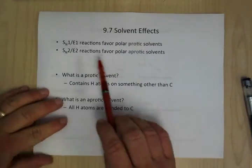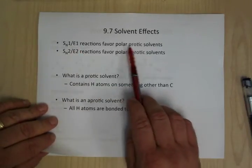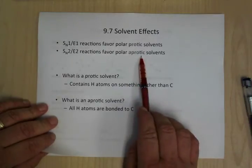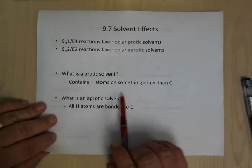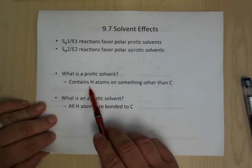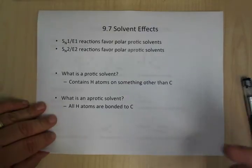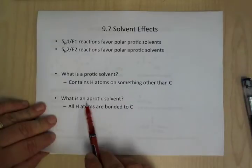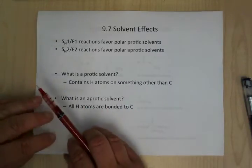Solvent effects: it turns out that SN1 and E1 reactions favor polar protic solvents, while SN2 and E2 favor aprotic solvents. A protic solvent is a molecule where somewhere there's a hydrogen atom on something other than carbon — it can be NH, OH, SH, anything like that. If all of your hydrogens are on carbon, then it's an aprotic solvent.